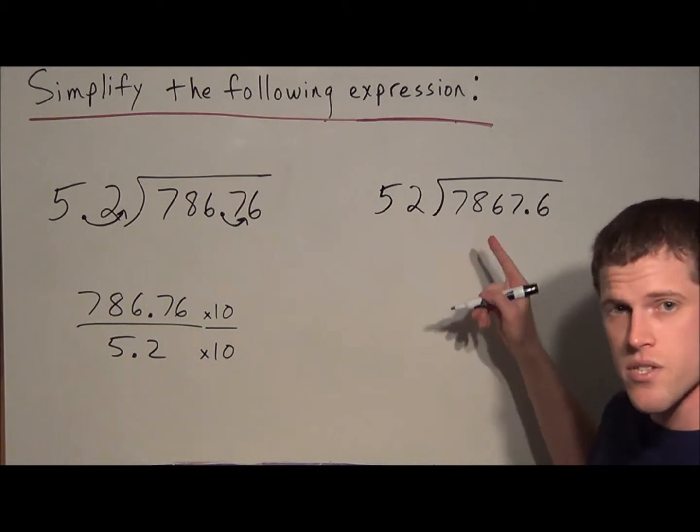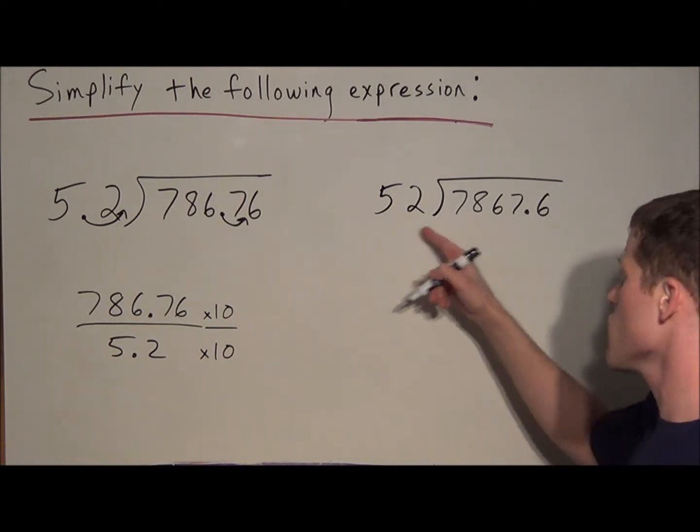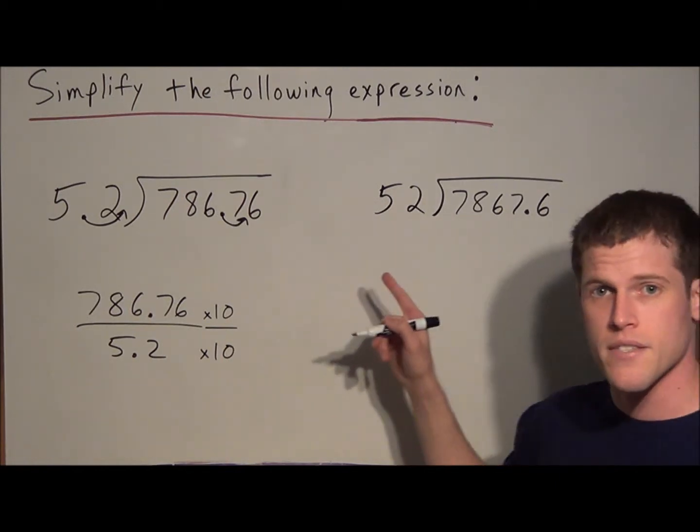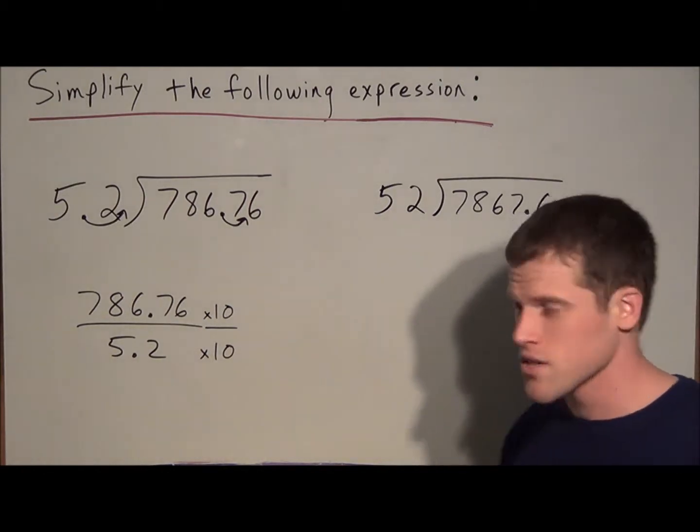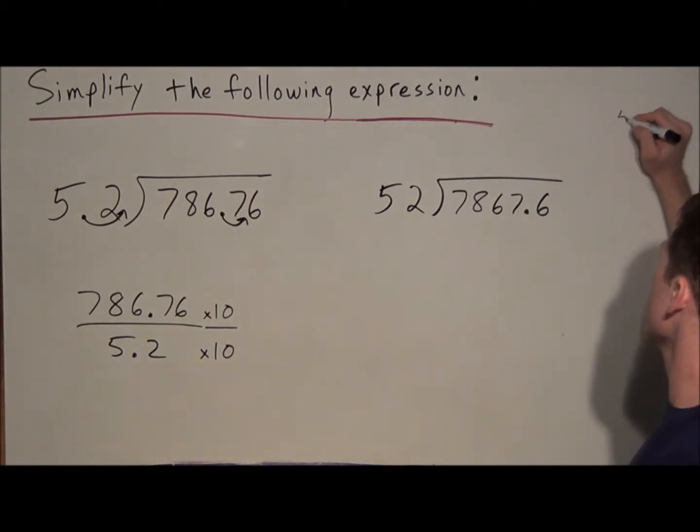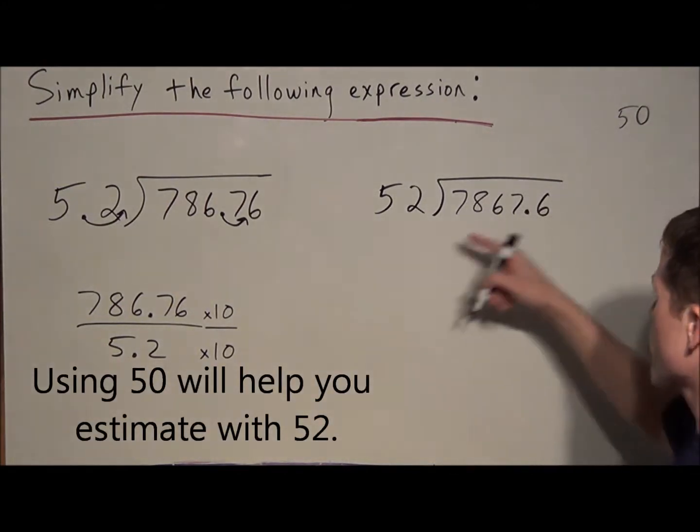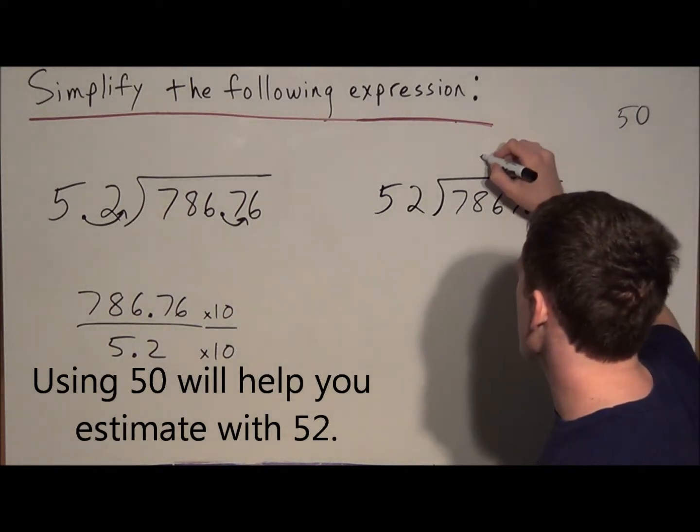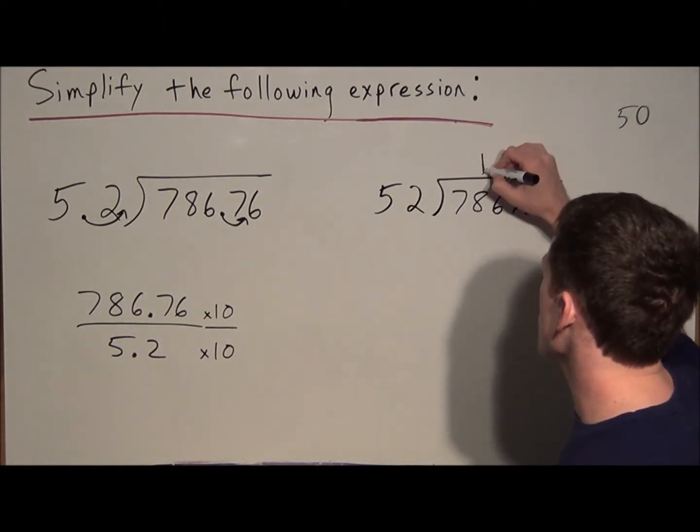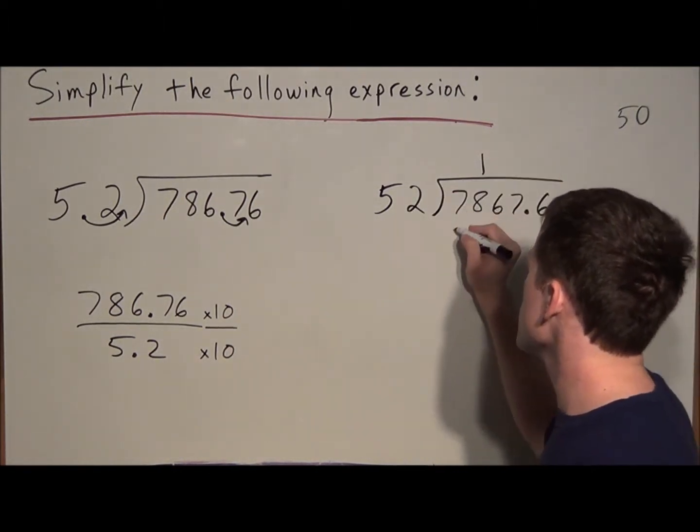52 will not go into 7, so we have to look one more place over. 52 will go into 78, and if you use estimation strategies, we're going to keep the number 50 in our head. Instead of 52, think counting by 50s is a lot like counting by 5s. So 50 will go into 78, and it'll go in once, and if we multiply by 1, 1 times 52 is 52.